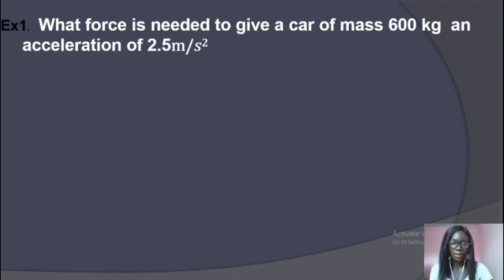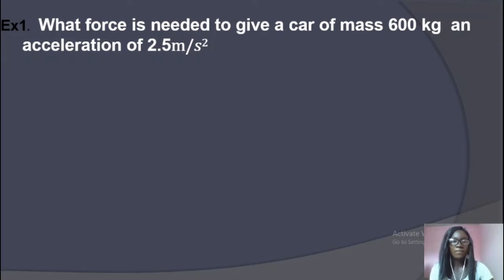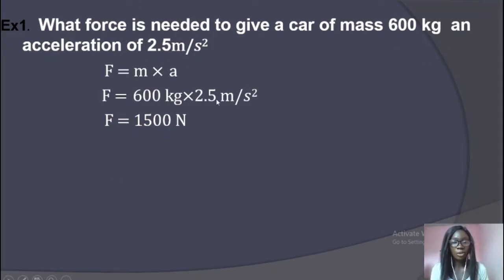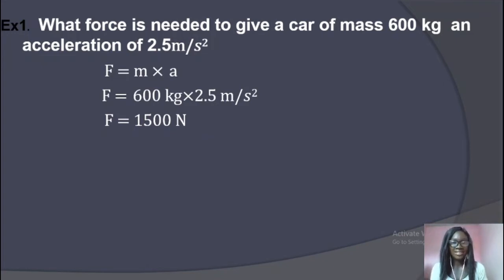Problem one: What force is needed to give a car of mass 600 kg an acceleration of 2.5 m/s²? Using our formula: Force = mass × acceleration = 600 × 2.5. The unit is either Newton or kilogram meter per second squared.